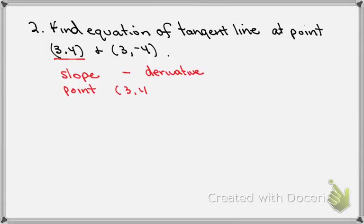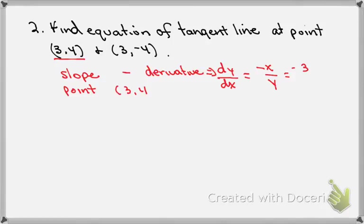In our case, that's going to be our dy/dx, which is equal to minus x over y. That means I'm going to substitute in 3 for x and 4 for y, so our slope is going to be minus 3/4, and our point is (3, 4).